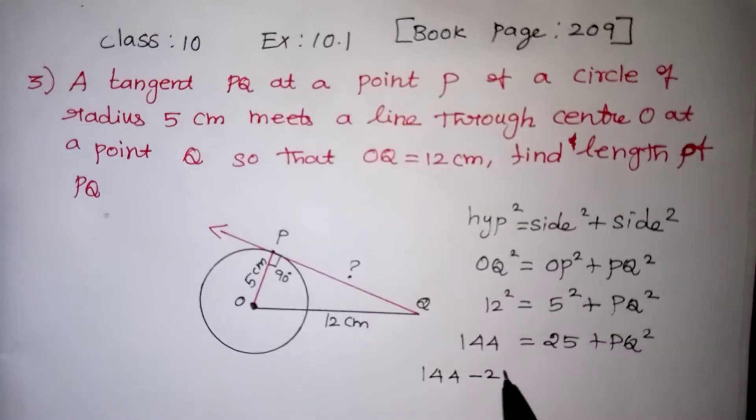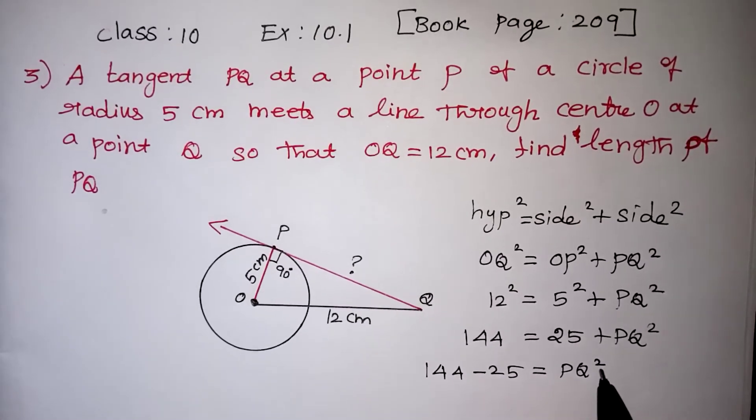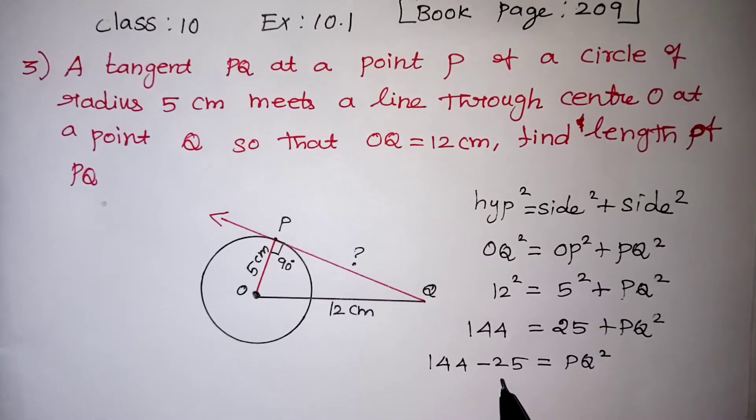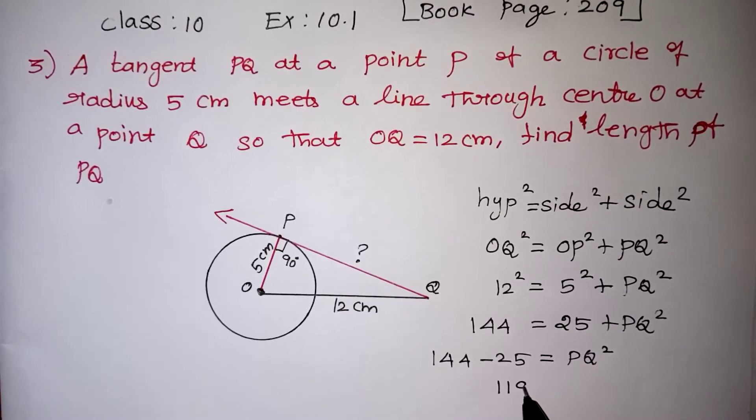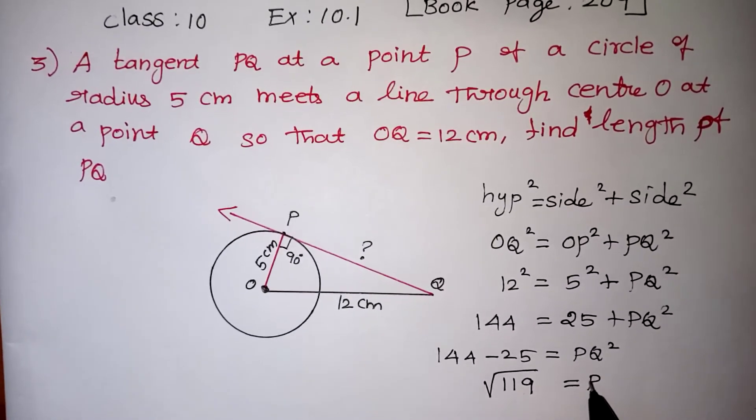So 144 minus 25 equals PQ squared. We need to find only the PQ value, the square I am going to bring to this side that will become square root. So 144 minus 25 will give you 119. The square is coming to this side that will become square root which equals PQ.